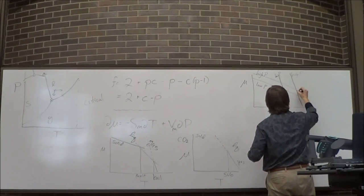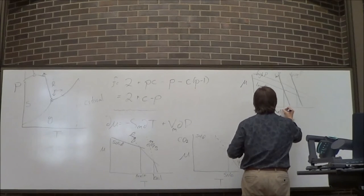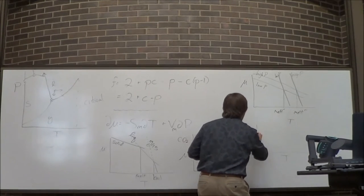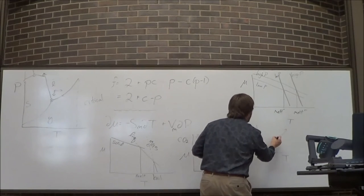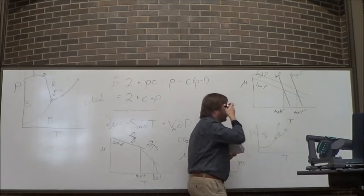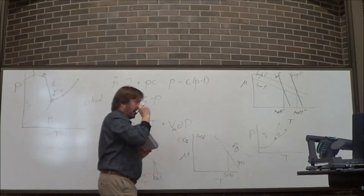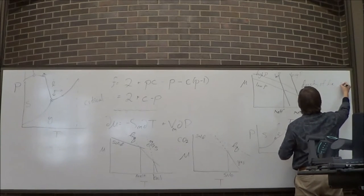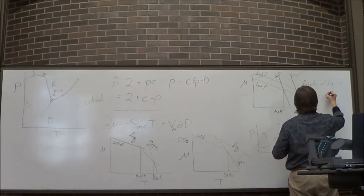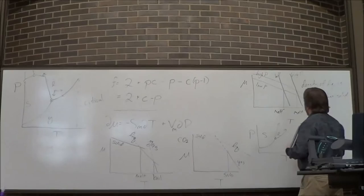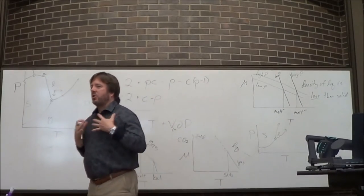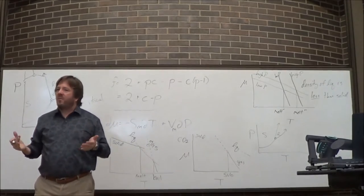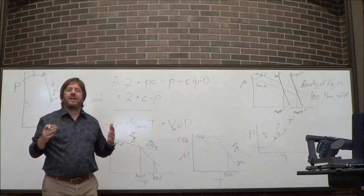Therefore the melting temperature increases with pressure. That's what I'm representing here, and that's how I know — when I get this right in a P versus T diagram — that the solid-liquid line slopes normally, which is to the right. The density of the liquid is less than the solid. If you're on the test and I ask something like this, you should just say, 'Yeah, that sounds right,' and that's correct.